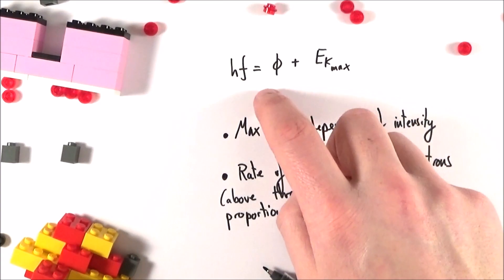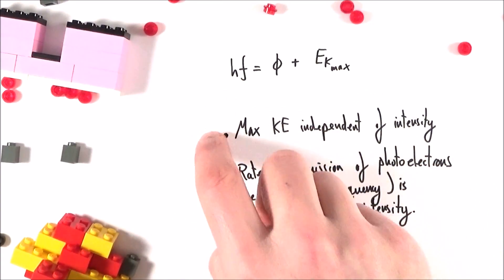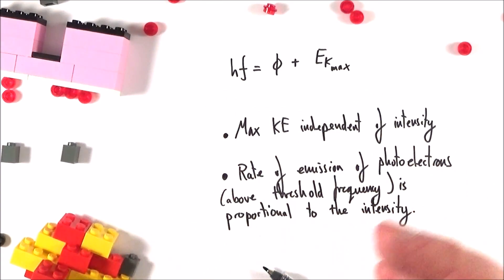But if a wave of light can be considered a particle, does that mean that particles can also have their own wavelengths?